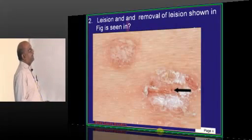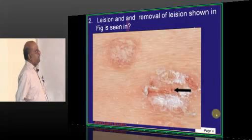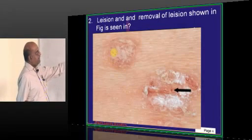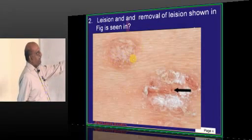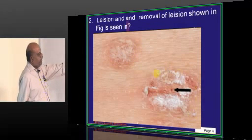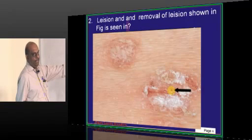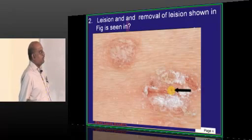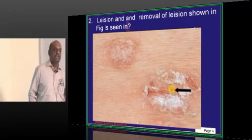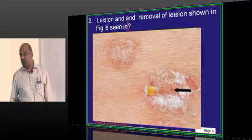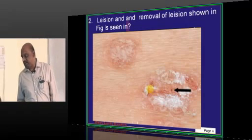There is a lesion, and on the removal of the lesion, what do you find? There is a drop of blood. So what is this clinical sign called? It is called the Auspitz sign.